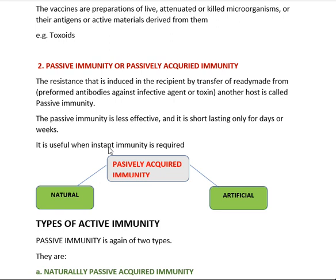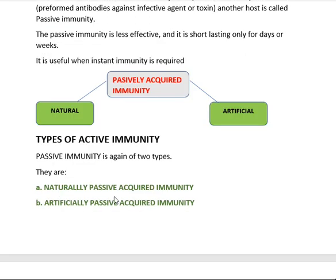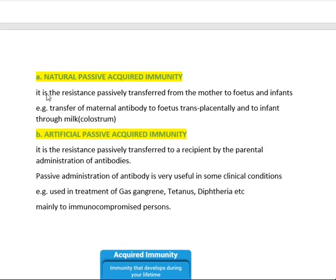Passive immunity is useful when instant immunity is required. This passively acquired immunity can be either by the natural method or by the artificial method, giving us two types: naturally passively acquired immunity and artificially passively acquired immunity.